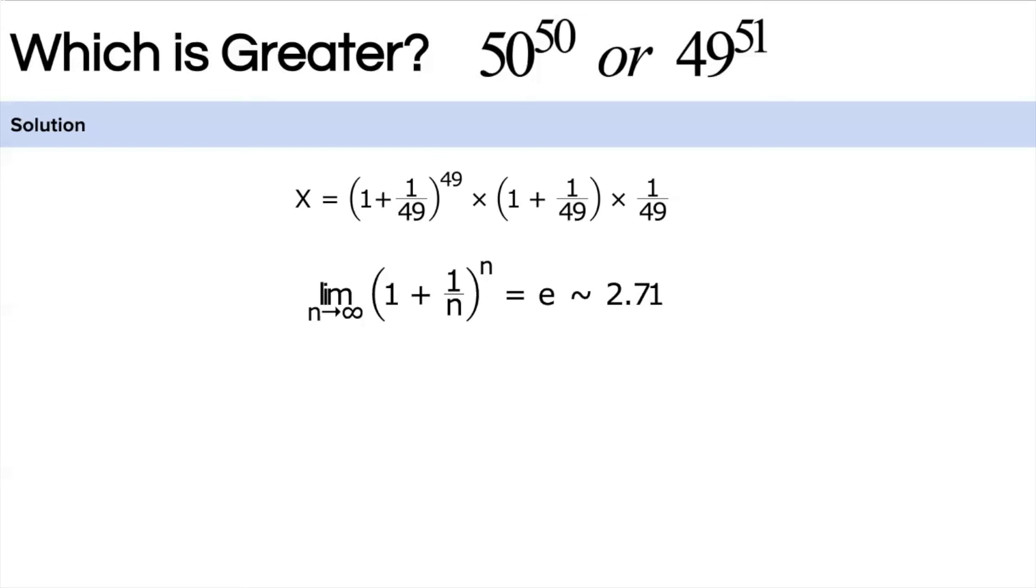Now we can calculate the value of x by multiplying the term 2.71, that is e, multiplied by 50 over 49, multiplied by 1 over 49. Now you can calculate the value of x. This means x is less than 1, and that means 49^51 is greater than 50^50. This was the approach to solve this problem.